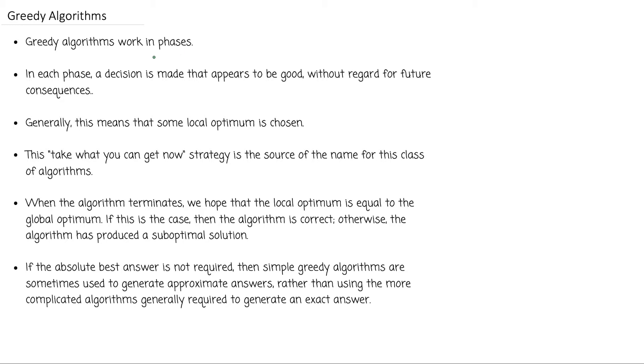The peculiarities of greedy algorithms are: greedy algorithms work in phases. In each phase, a decision is made that appears to be good without regard for future consequences. We will make a decision depending on what appears to be good at that moment without any regard for what will happen in the future. Generally, this means that we are selecting some local optimum rather than the global optimum.